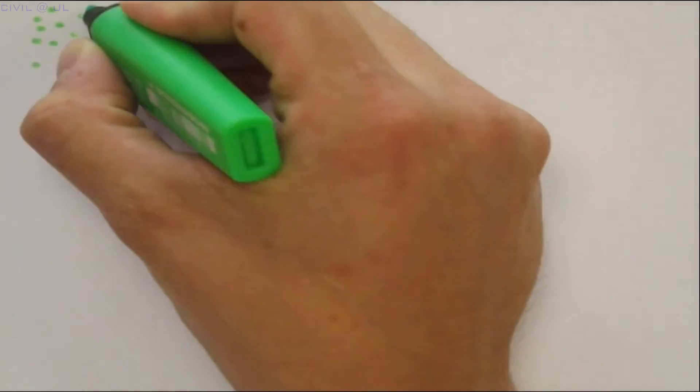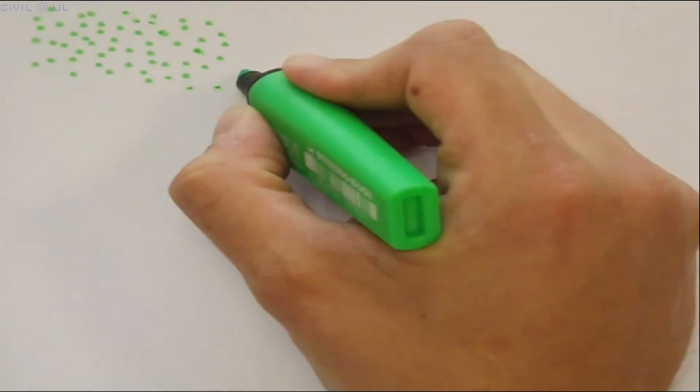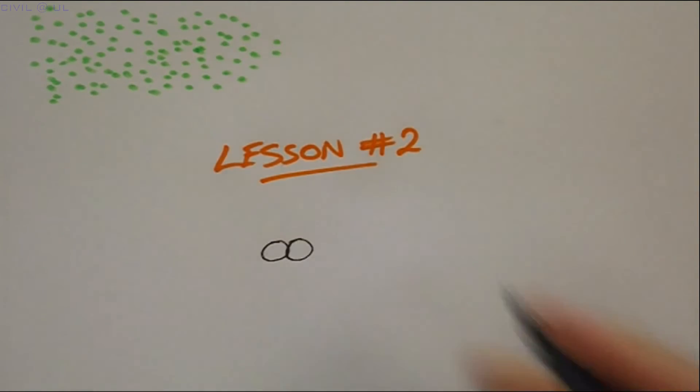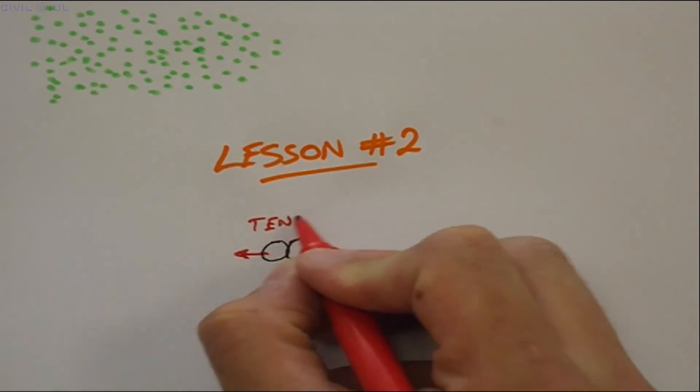Interestingly, as soils are made up of millions of individual particles resting one on top of the other, they are essentially unbonded. And this leads us to our second important lesson, and that is, soils have no strength when subjected to tension.